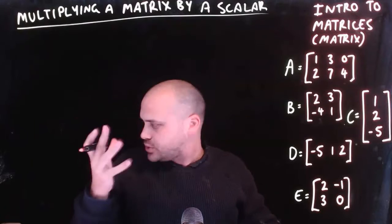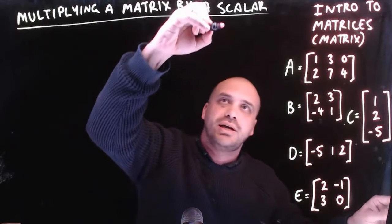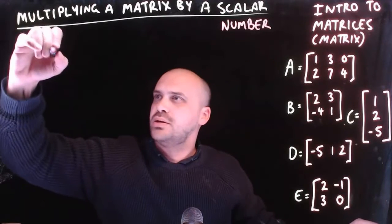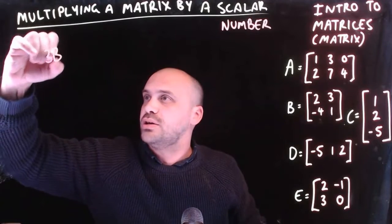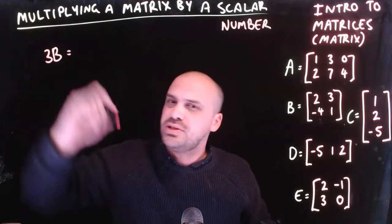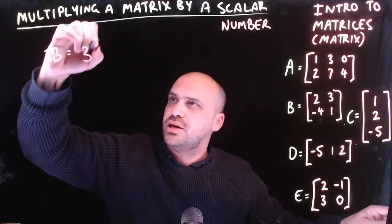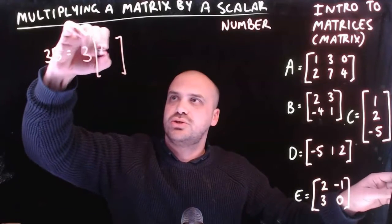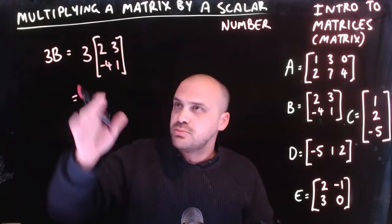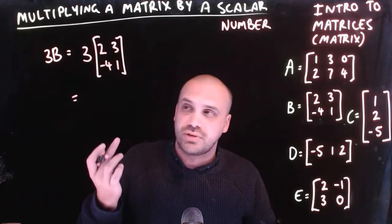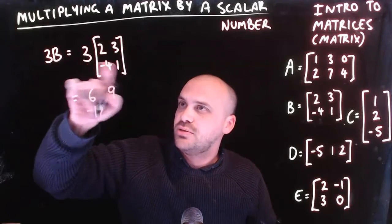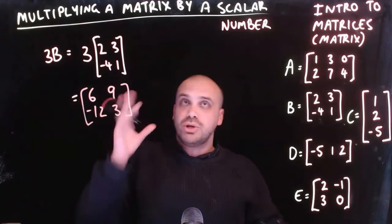We need to talk about multiplying a matrix by a scalar. A scalar is just a number. So if I took matrix B and multiplied it by 3 — written as 3B — this works exactly how you'd expect. 3 times matrix B, which is [2, 3, -4, 1]: you just multiply every single element by 3. So 3 times 2 is 6, 3 times 3 is 9, 3 times negative 4 is negative 12, and 3 times 1 is 3.